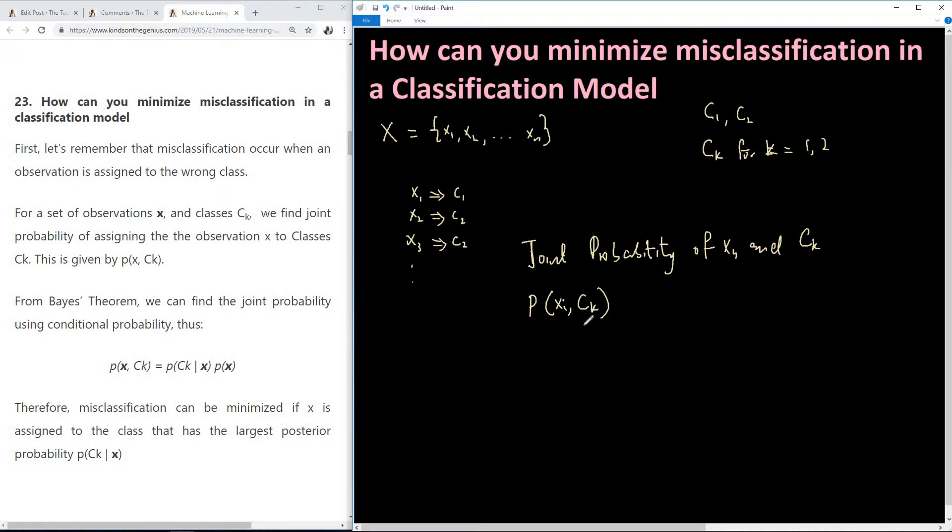Now from Bayes theorem we can find joint probabilities using the formula. I'm going to write it out. So we have joint probability given by P(x, Ck) is given by the conditional probability of Ck given x times the marginal probability of x.